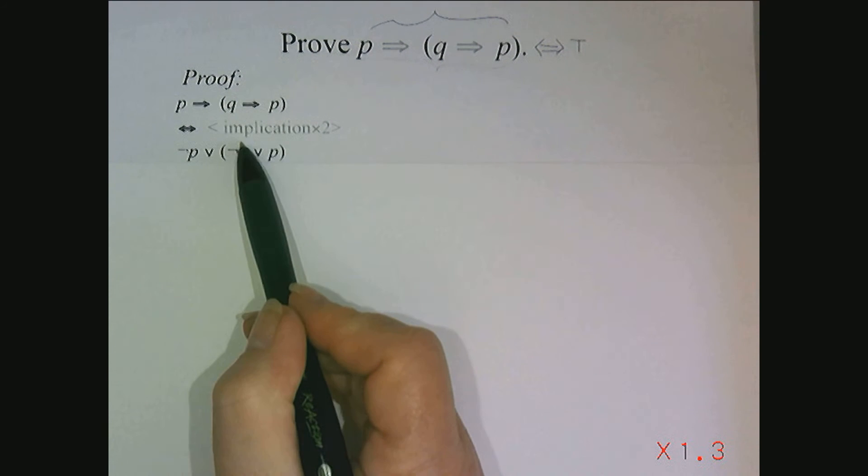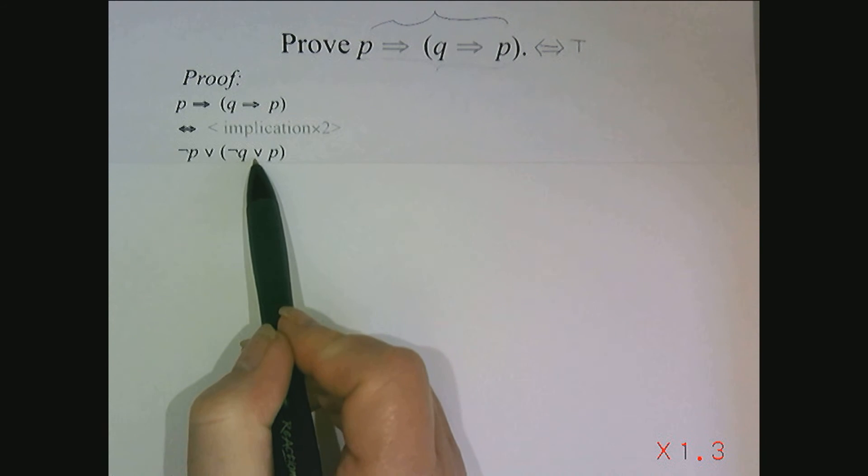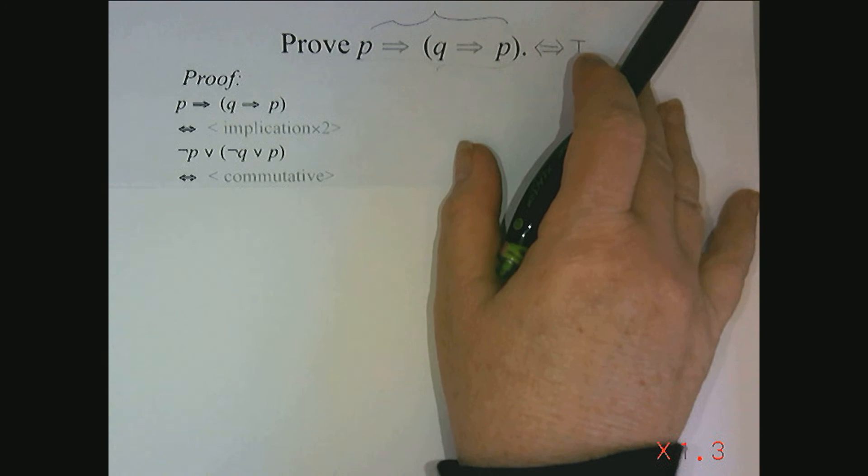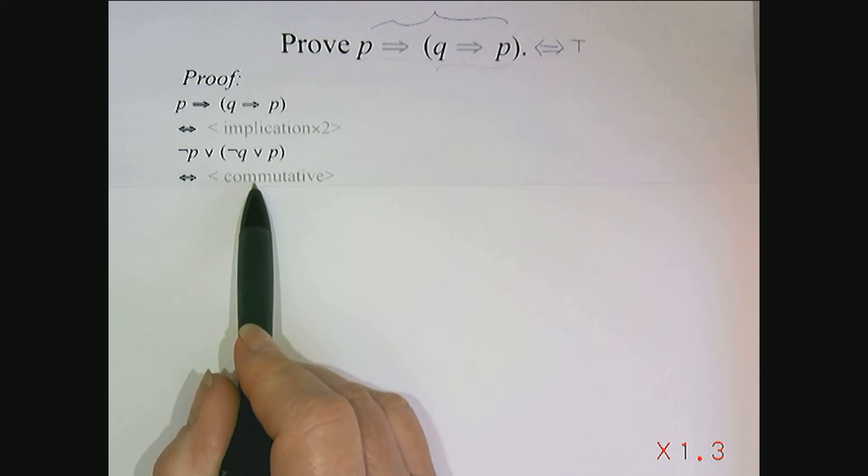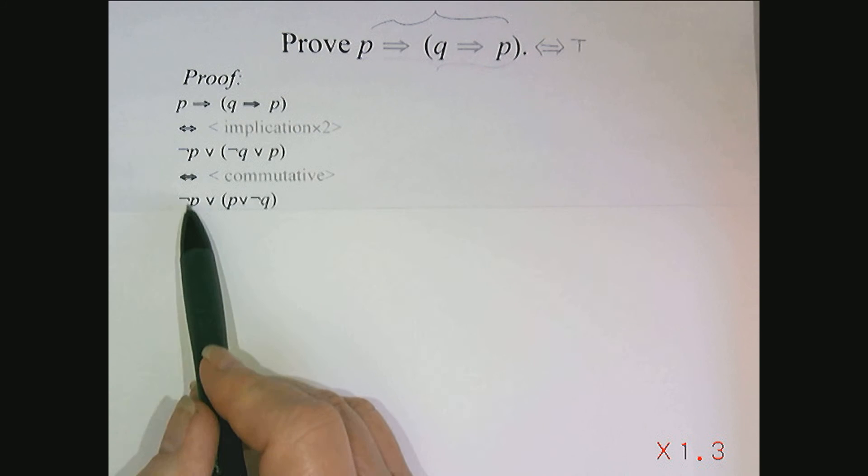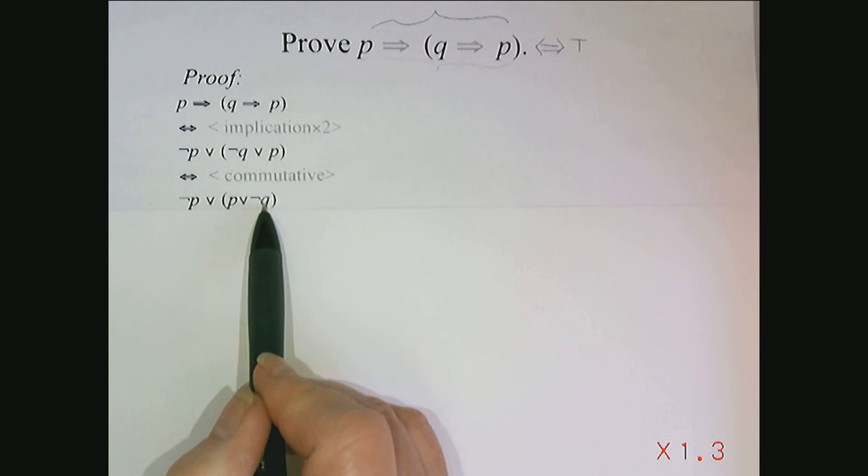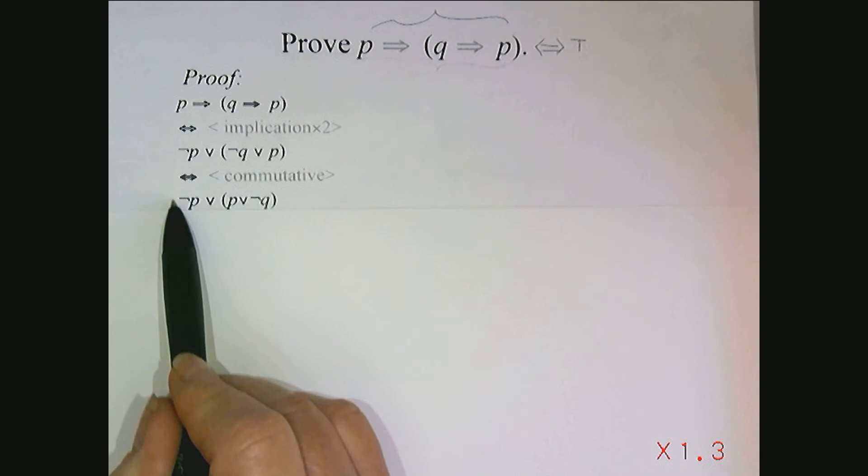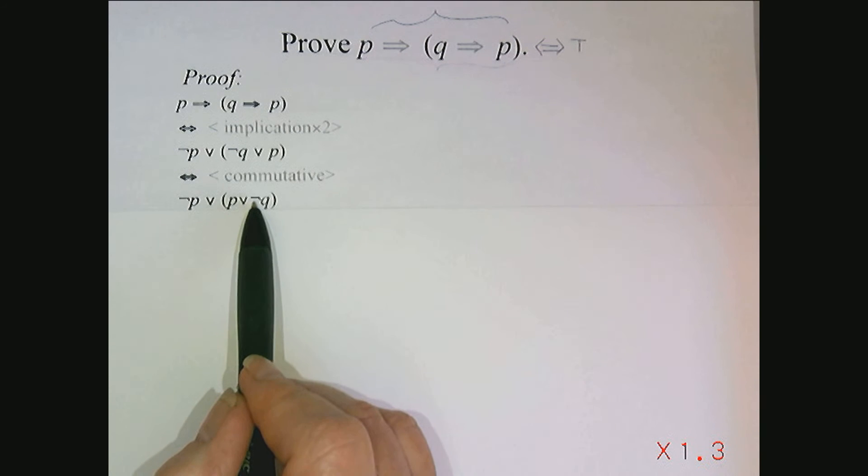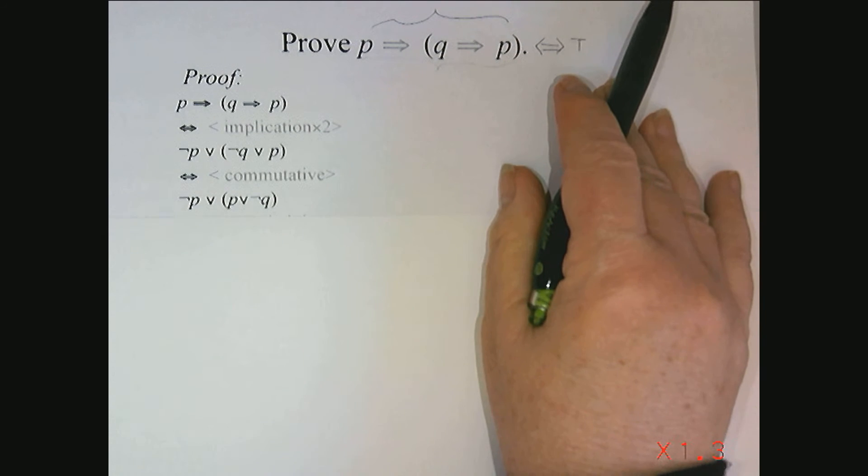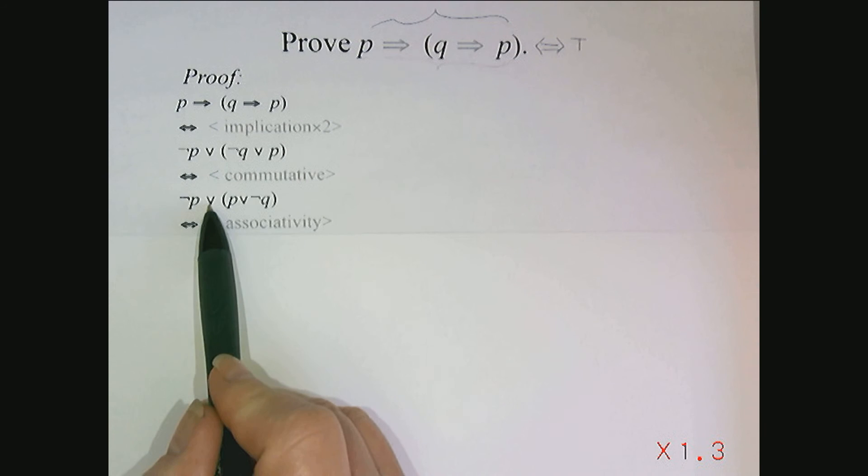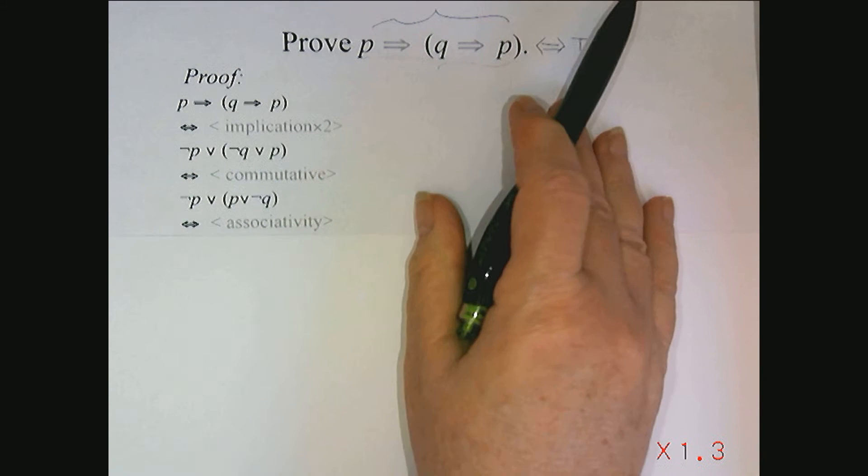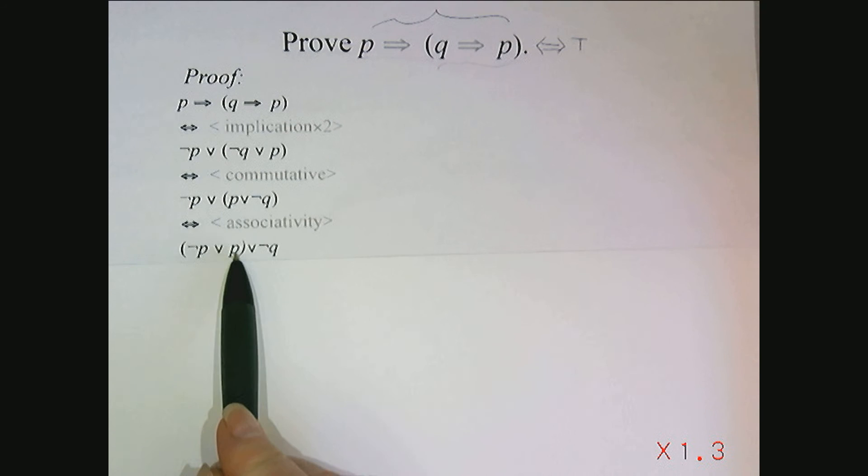So one thing I could do is switch the order in this disjunction. And write this as, by commutativity, not P or P or not Q. And then what I'd like to do is to associate the P and the not P instead of the P with the not Q. And so by associativity, I know disjunction is associative. So this is equivalent to not P or P or not Q.